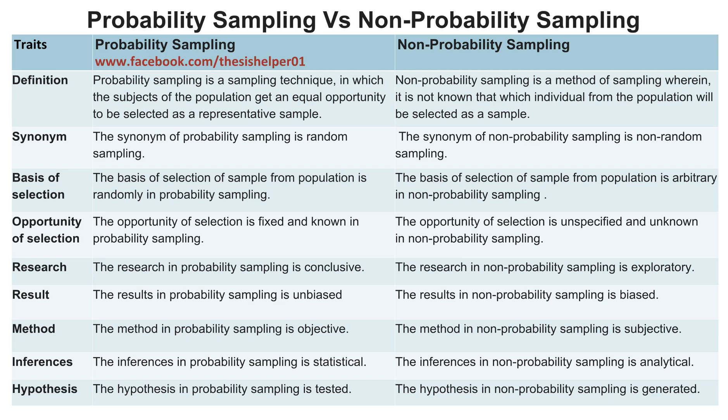The hypothesis in probability sampling is tested, whereas the hypothesis in non-probability sampling is generated.